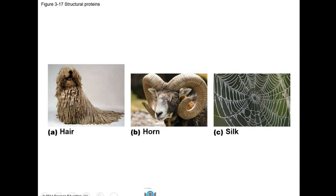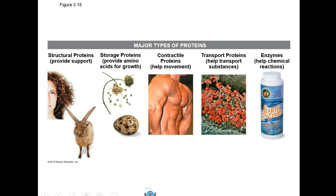This image is showing some examples. Protein is found in hair, horns, and silk. Proteins can provide roles as mentioned before, such as structural, storage, movement, transport, and enzymes.